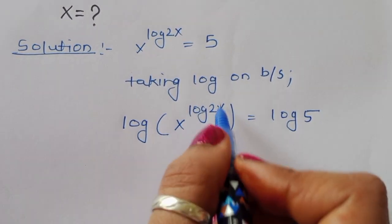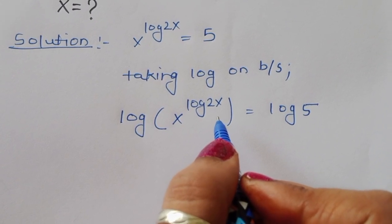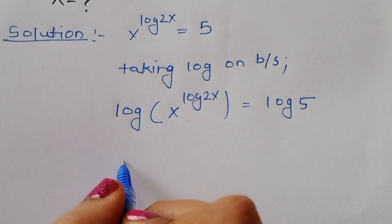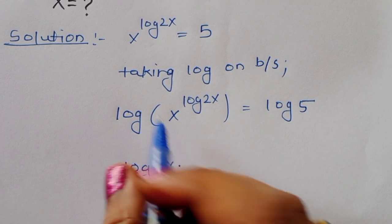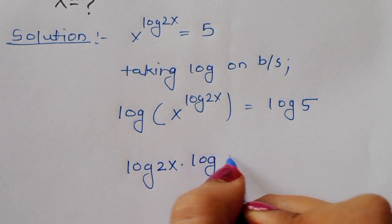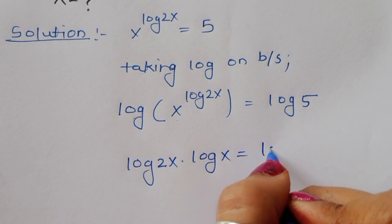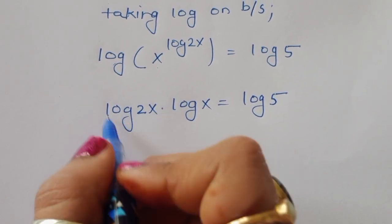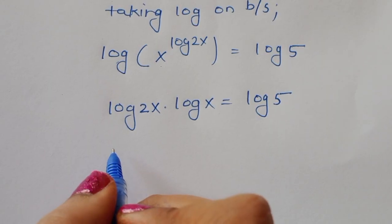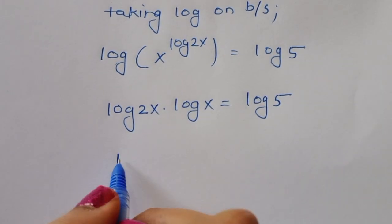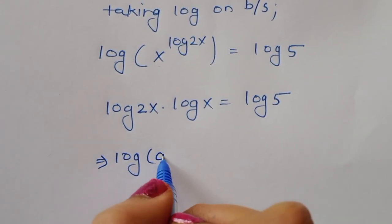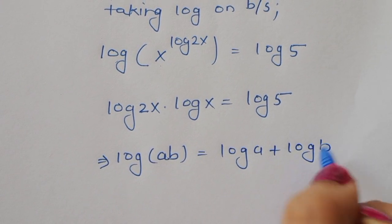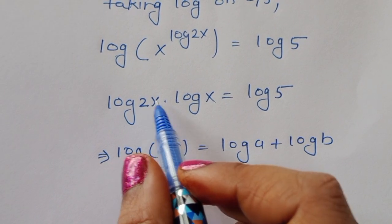Using the logarithm power rule, log(2x) comes down as a multiplier, so we get log(2x) times log(x) is equal to log(5). Now, using the product rule log(ab) = log(a) + log(b), we can expand log(2x) as log(2) plus log(x).